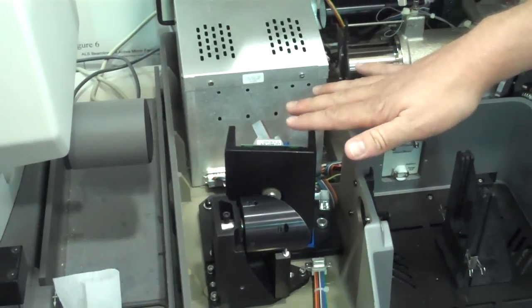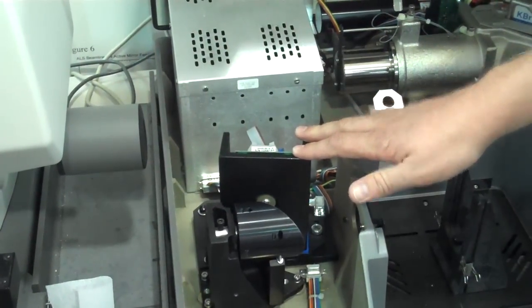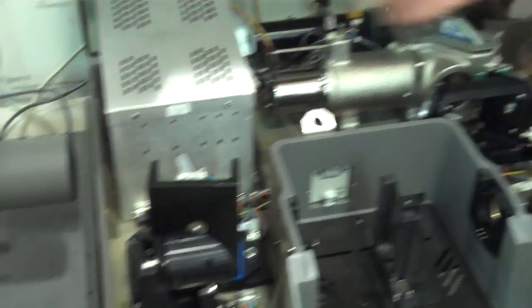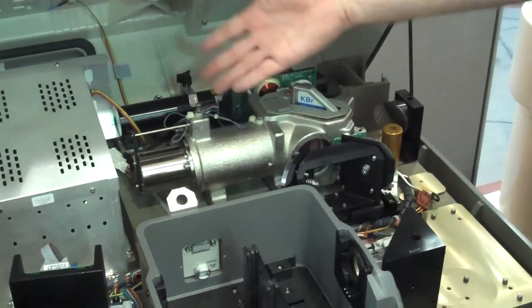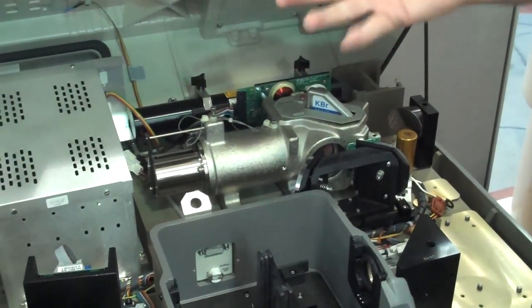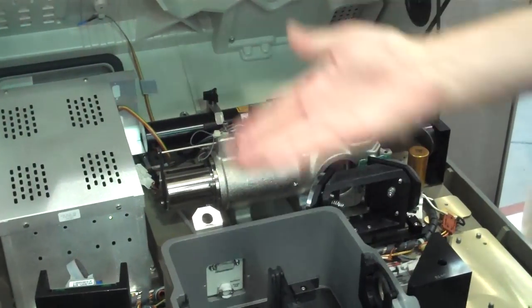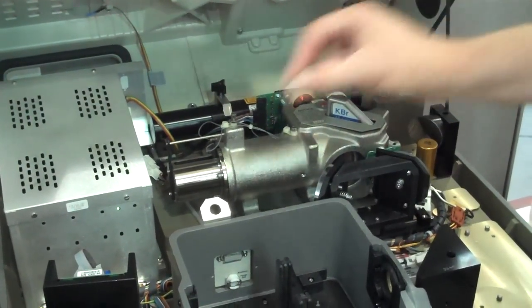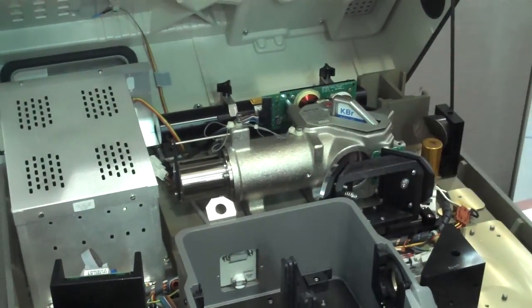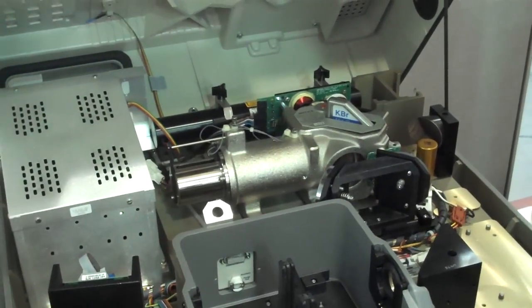So now what we do is we just measure the amount of detected light as a function of the interference that we're putting on it by having one of these mirrors moving back and forth. It's called a Fourier transform spectrometer because you do a Fourier transform of this measurement, of this interference pattern, and that gives you the actual spectrum that you're looking for of the sample.